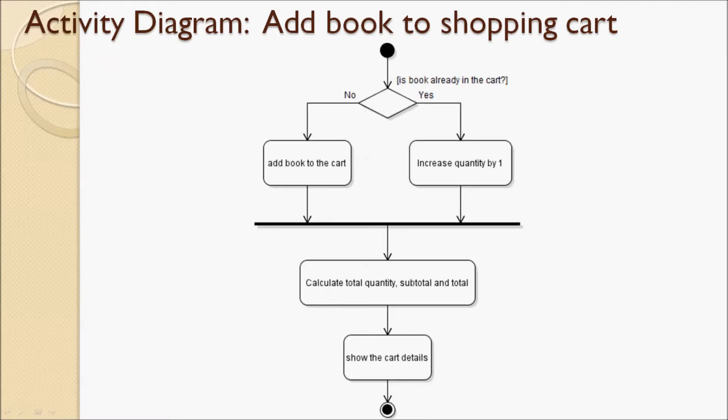Let's see the activity diagram for the Add Book to Shopping Cart function. First, we need to check if the book is already contained in the cart or not. If yes, we just increase the quantity of the book in the shopping cart by 1.